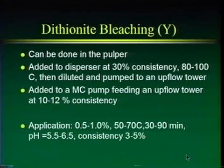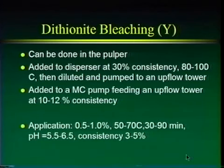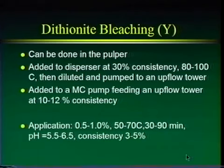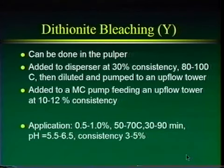Dithionite application conditions: 0.5–1% on pulp, 50–70°C, 30–90 minutes retention, pH 5.5–6.5 (slightly acidic), consistency 3–5% or higher.